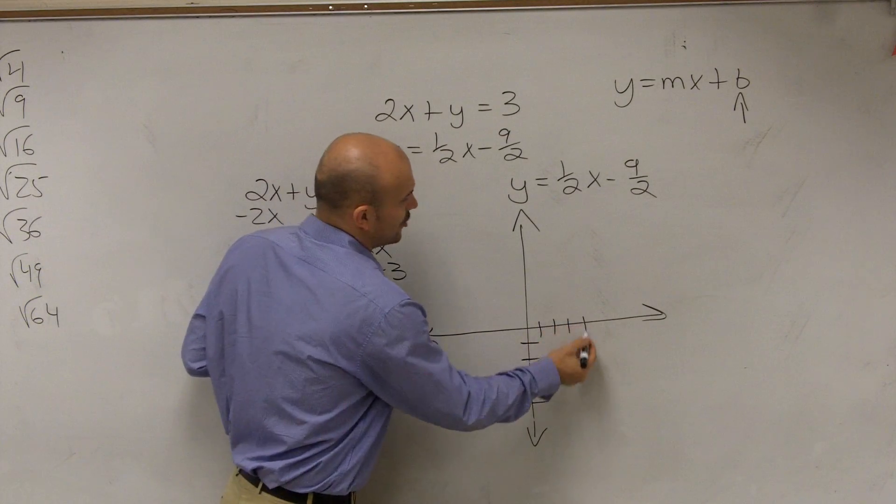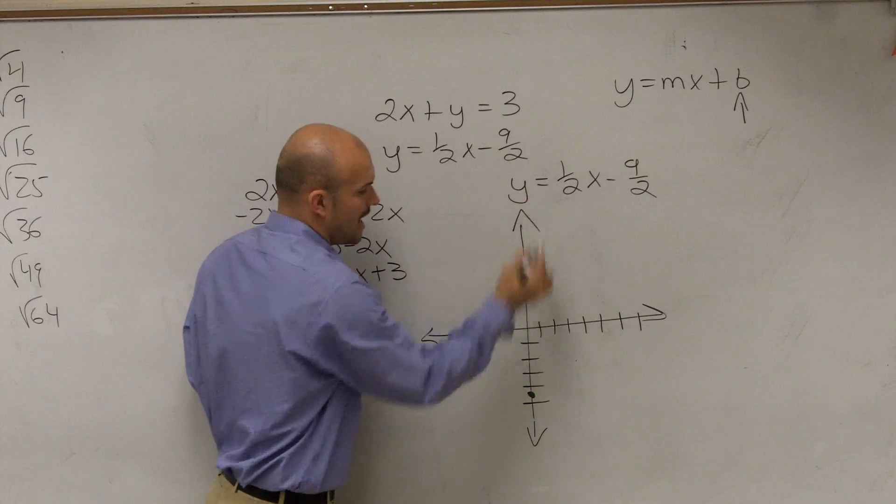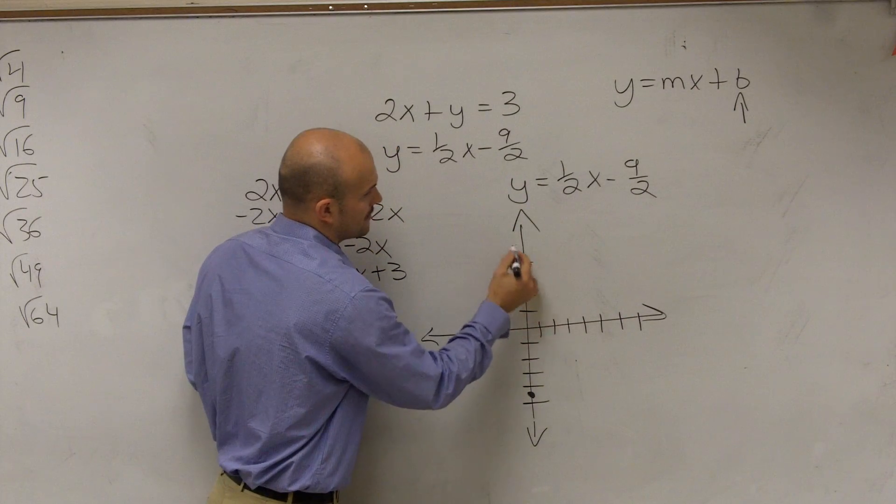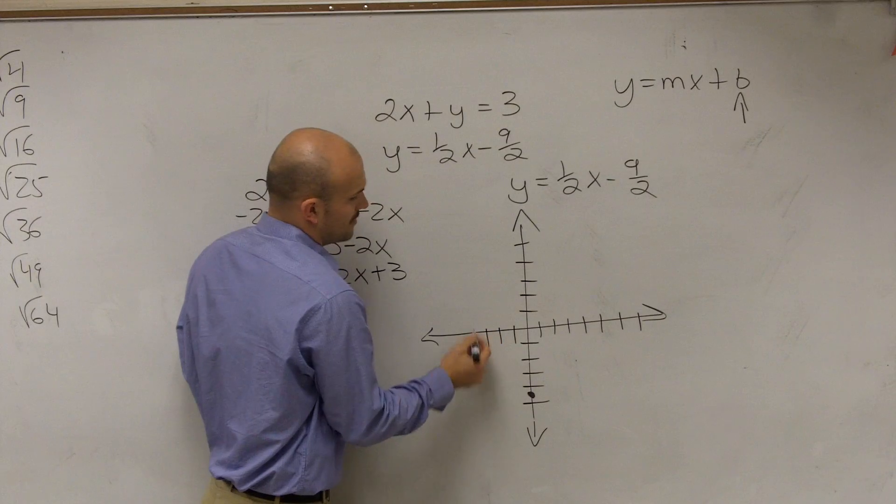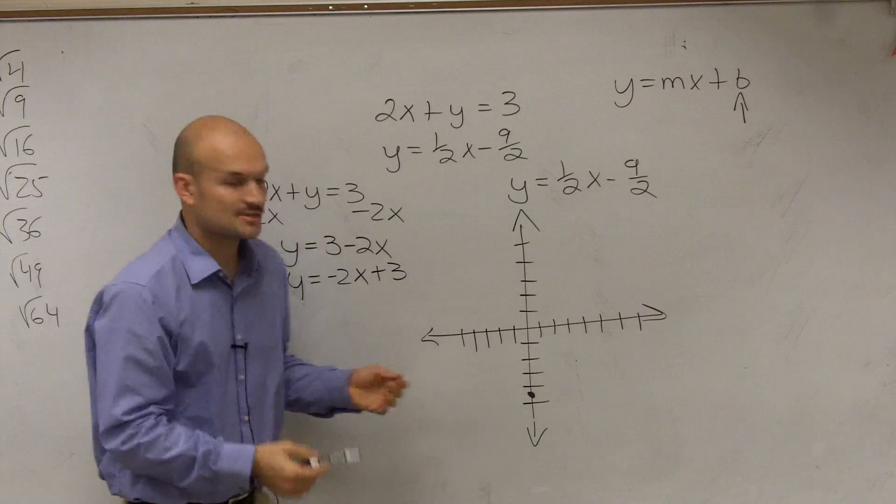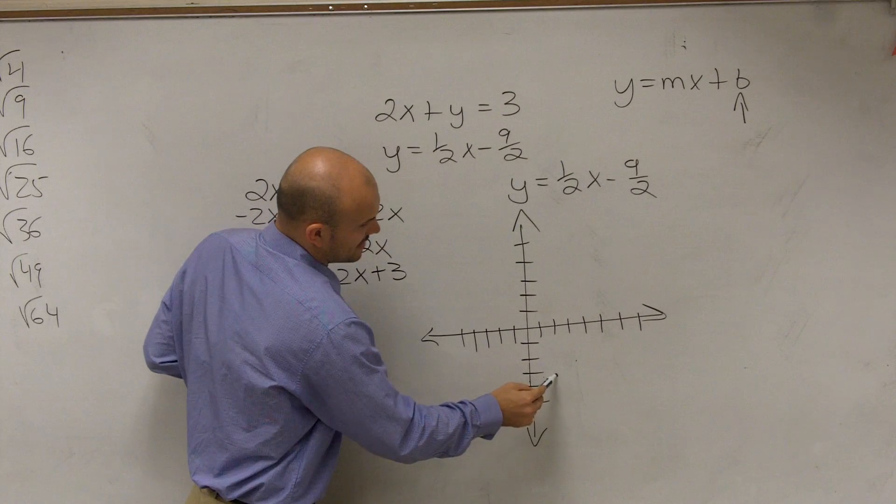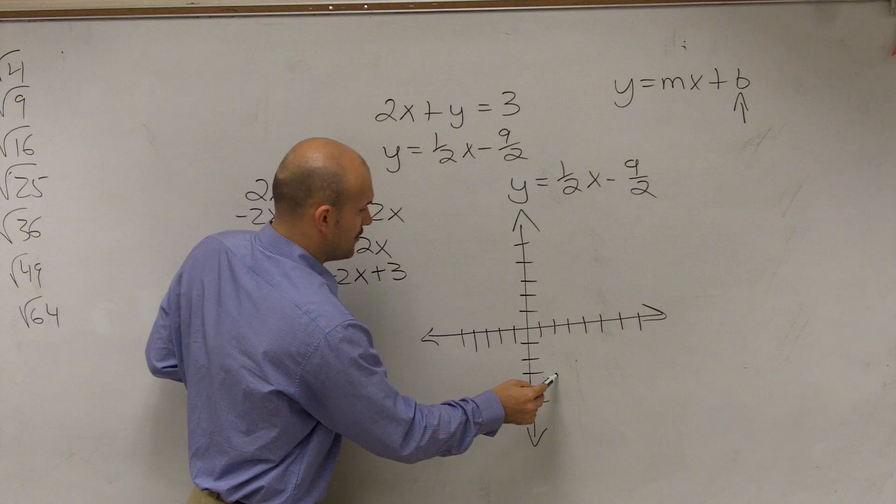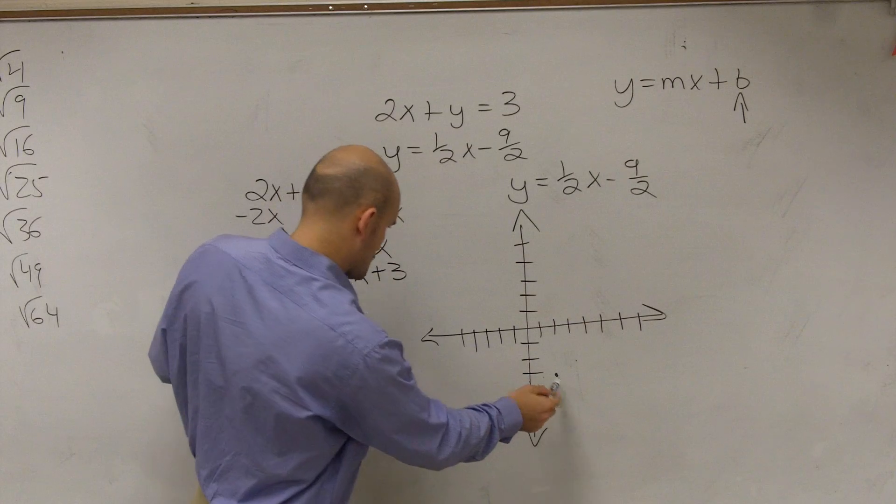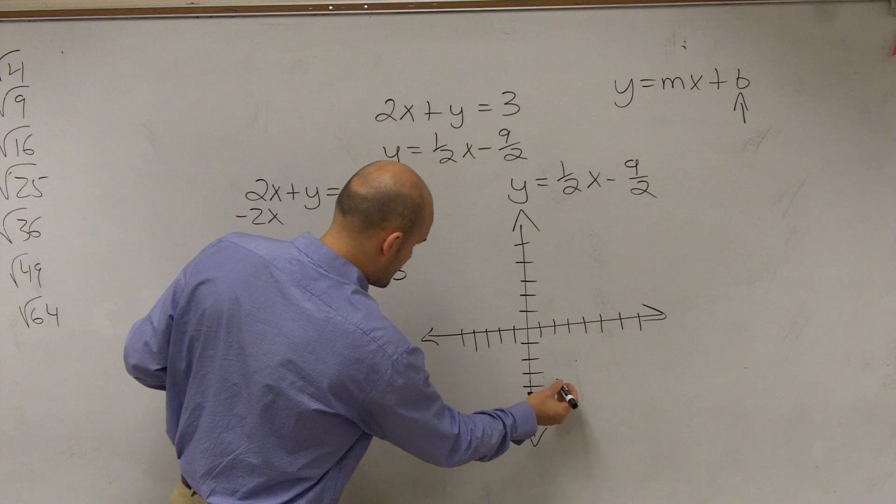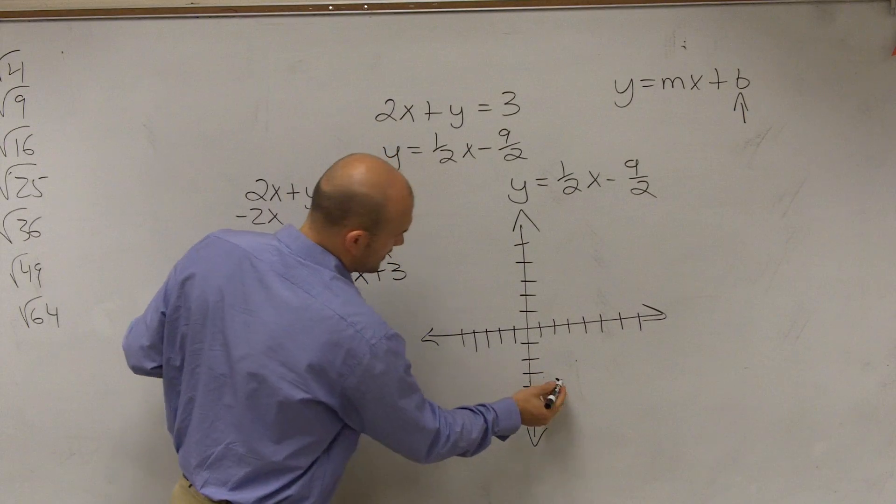Then what my slope now is saying, Yago, 1/2 tells me to do what? Up 1 how far? Up 1 what? Yeah, so I'm just going to go up 1 unit over 2. And I'll make another dot there. And then I'll go up 1 unit. I'll probably be like right there.